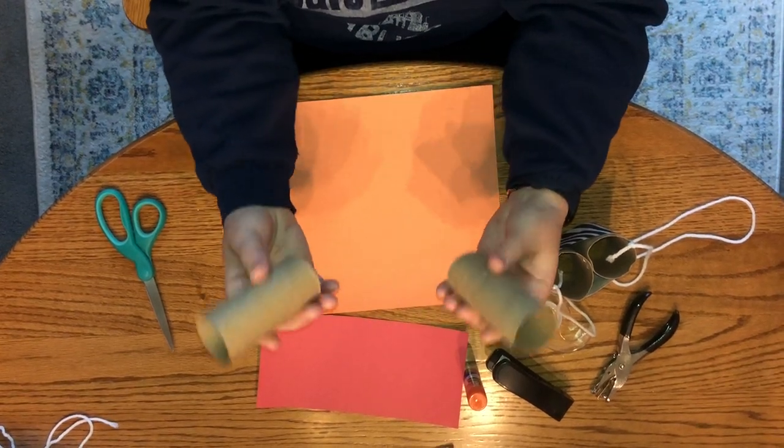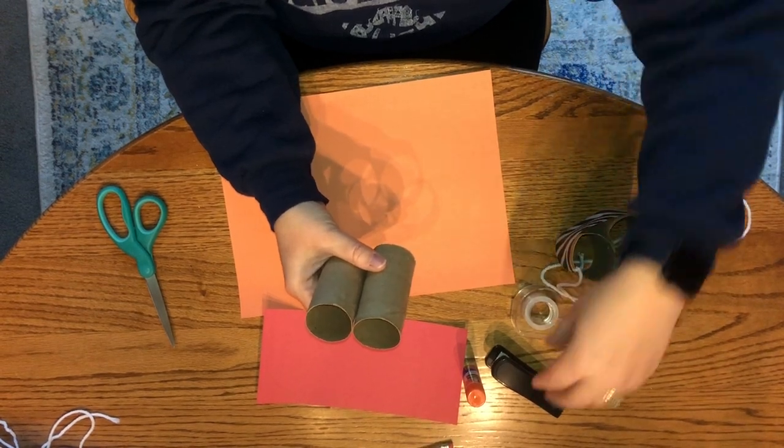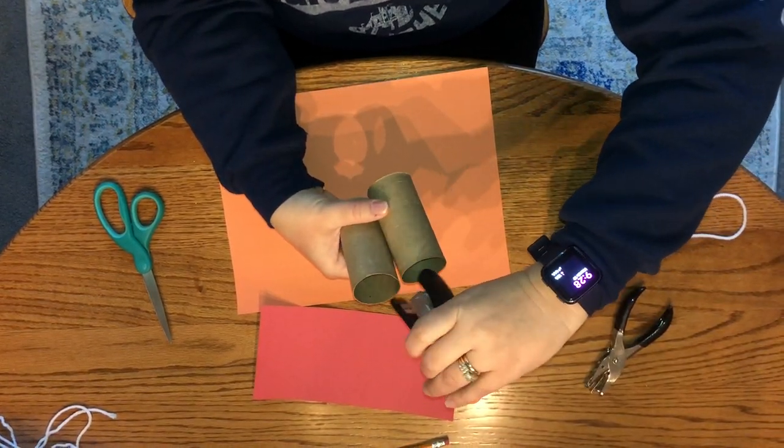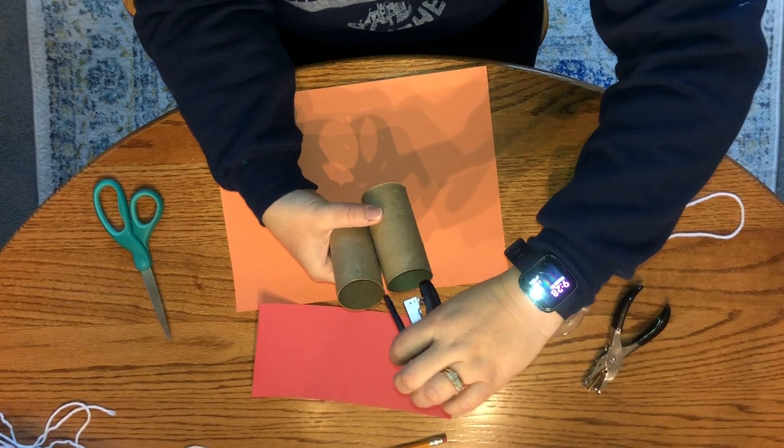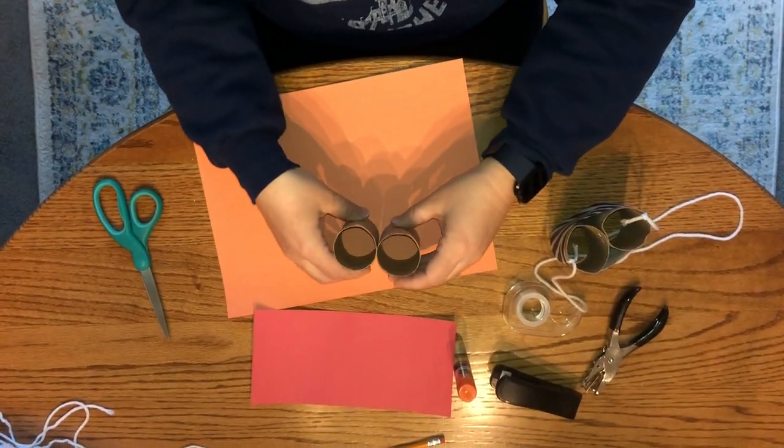Now for these binoculars, I use my stapler and stapled them together in the center at the top and then at the bottom. If you don't have a stapler, you can take a piece of tape and tape them together.